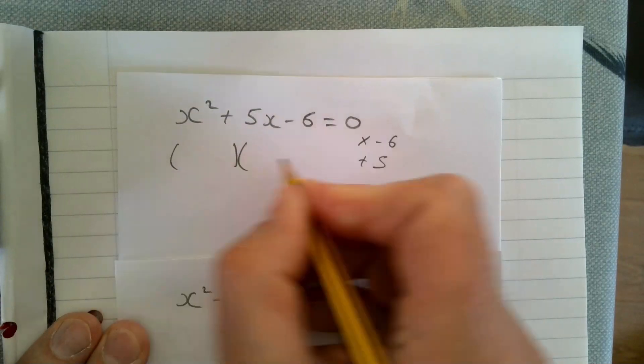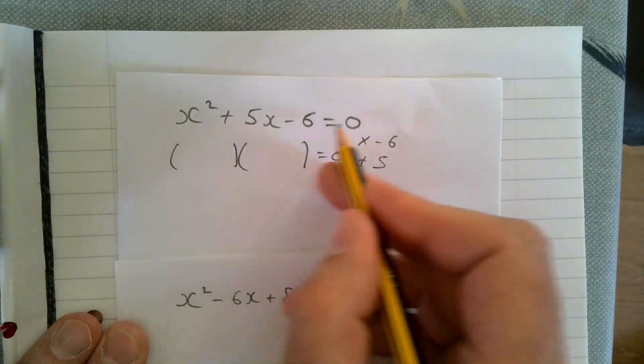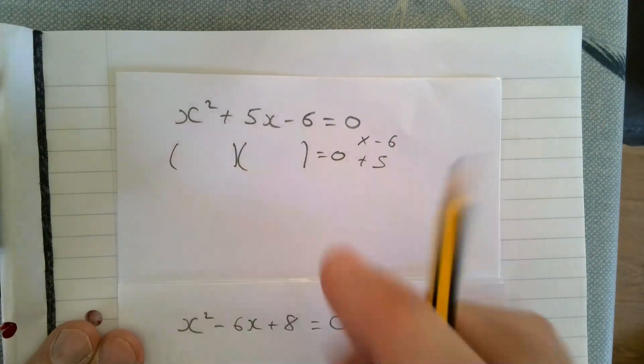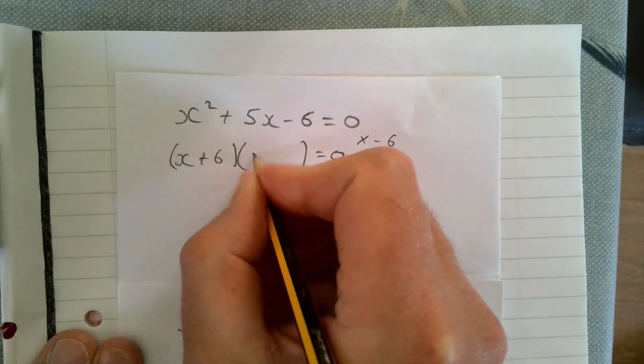We can put those straight into our two brackets. Remember the equals zero—we're not just factorizing an expression, we're solving the equation. So that's going to be x plus six and x minus one.